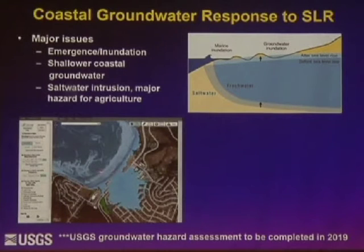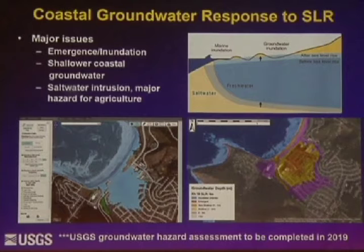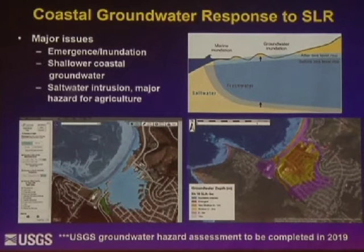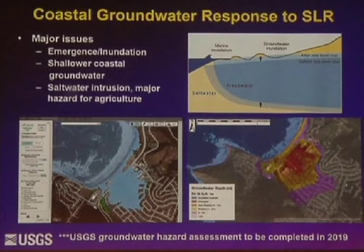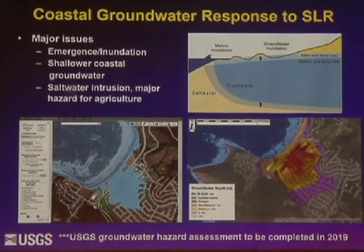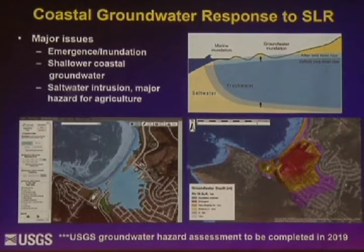A parallel hazard that we've started talking about more in the agency and scientific community is that as sea level rises, the coastal water table is going to rise as well. In some cases it will intercept the land surface before overland flooding becomes common, along with saltwater intrusion. Looking at Pacifica, an extreme storm by end of century shows potential overland flooding. But if you look at the response of the water table — currently very shallow behind Lindemar — adding one meter of sea level rise shows the water table in red actually emerging at the surface. Groundwater is going to be an issue we have to consider.